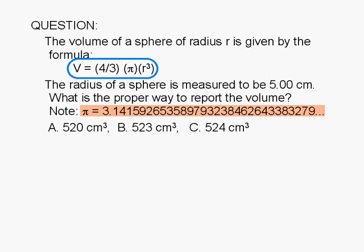524 centimeters cubed. Although pi is, strictly speaking, an exact number, it is also an irrational number, and we can't write it exactly. The question is, how should we round it off for this calculation?